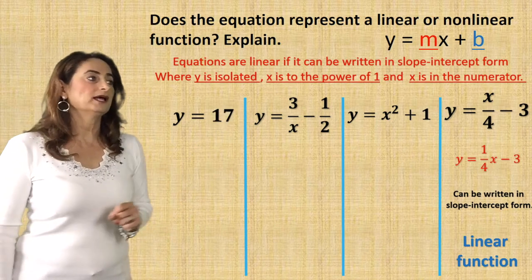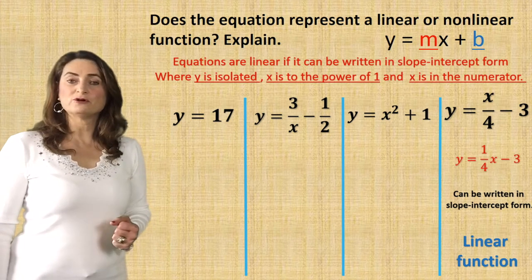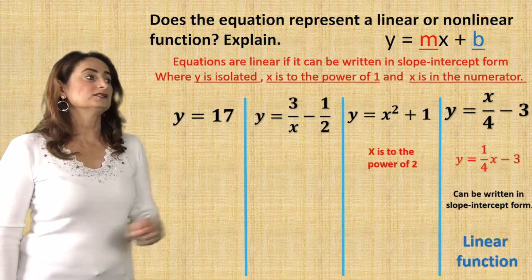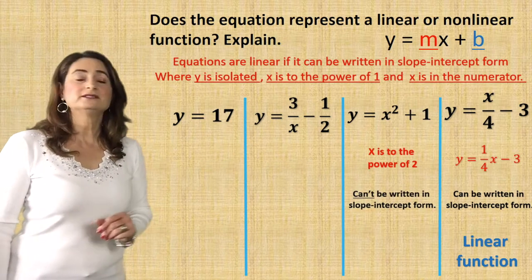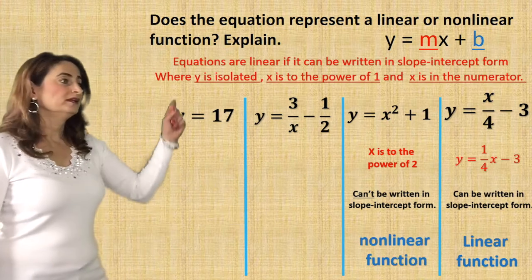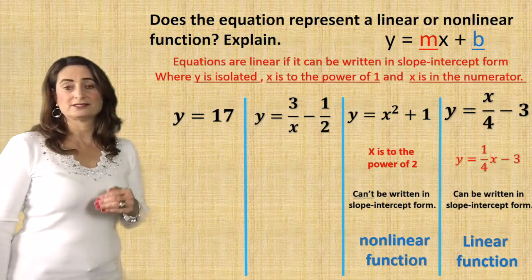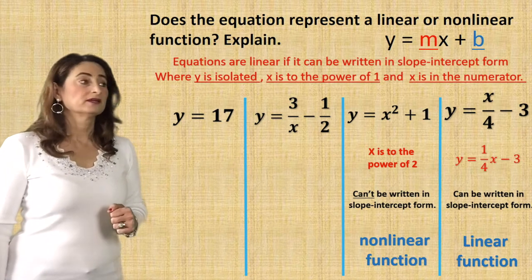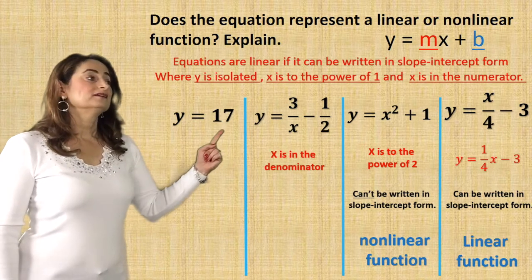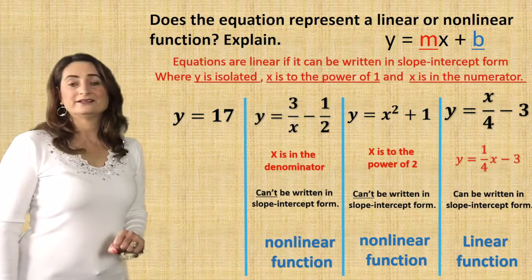The second one: y = x² + 1. Can you write it in slope-intercept form where x is to the power of 1 and y is isolated? No — x is to the power of 2, so it cannot be written in slope-intercept form. Therefore it's a nonlinear function. Now this one: y = 3/x - 1/2. Watch how x is in the denominator, so you cannot write it in slope-intercept form — nonlinear function.